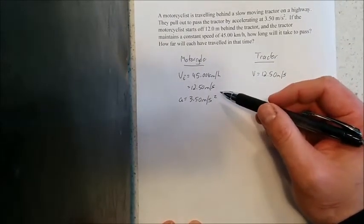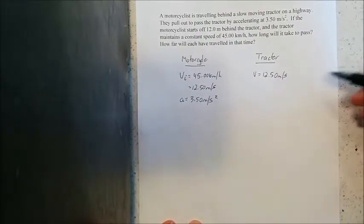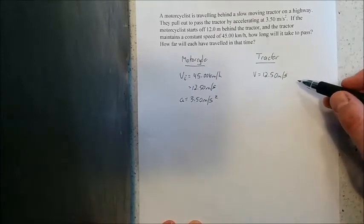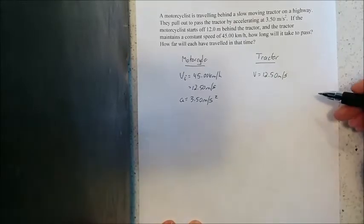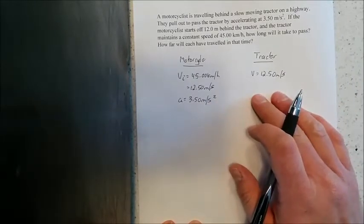For the motorcycle you're looking at an accelerating body and all the equations we have involve four variables and we only have two here. With the tractor, although it's the constant speed equation, it involves three variables we only have one. So independently these two won't give us enough information.